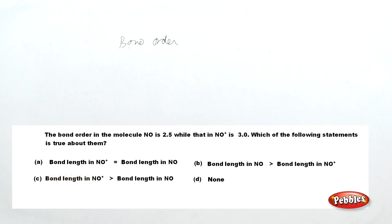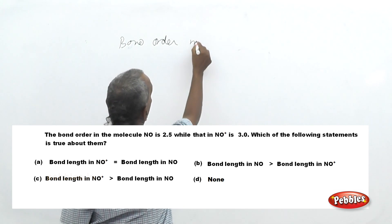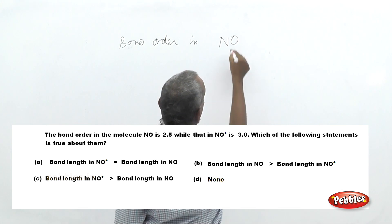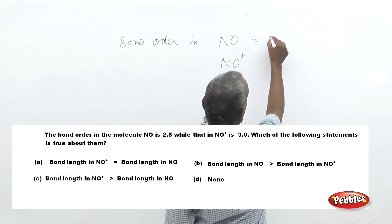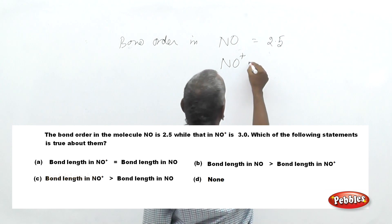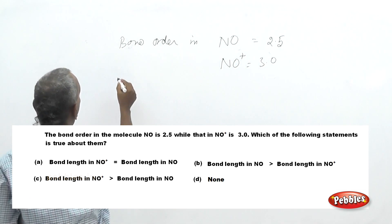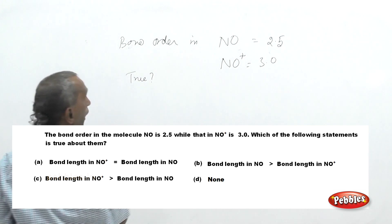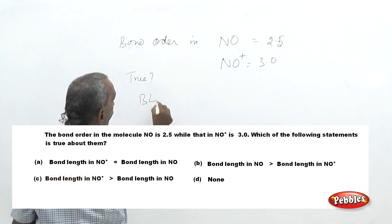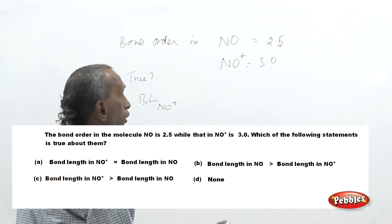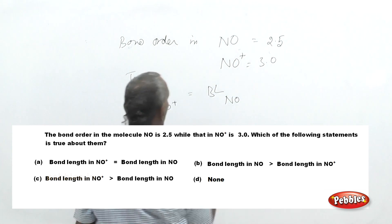The question reads: which of the following species — bond order is given for nitric oxide (NO) and nitrosyl cation (NO⁺). Bond order in nitric oxide is given as 2.5, and bond order in nitrosyl cation is given as 3.0. The question asks which of the following statements is true about these two species.